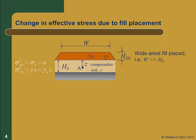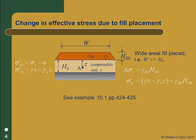Now we place a wide fill on the soil with thickness h fill and unit weight gamma fill. By wide, we mean that the width of the fill w is much greater than the thickness of the soil layer, h0. In this case, the change in stress will be the same anywhere under the fill, and this will be a one-dimensional problem. To compute the change in vertical stress, we only need to realize that this fill now looks like just another soil layer, and the change in vertical stress is simply the geostatic stress due to the fill layer. That is, delta sigma z is gamma fill times h fill. The final vertical effective stress at A will be gamma times z minus gamma water times z plus gamma fill times h fill.